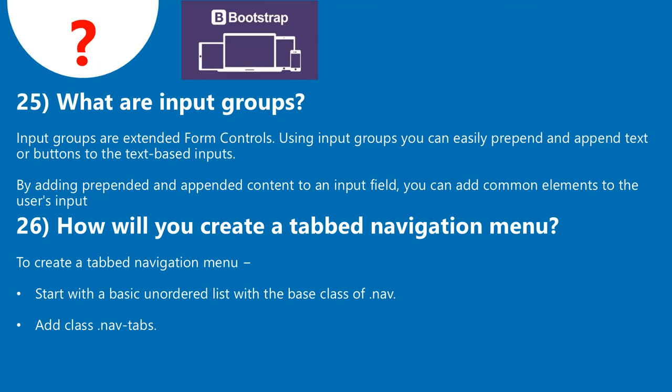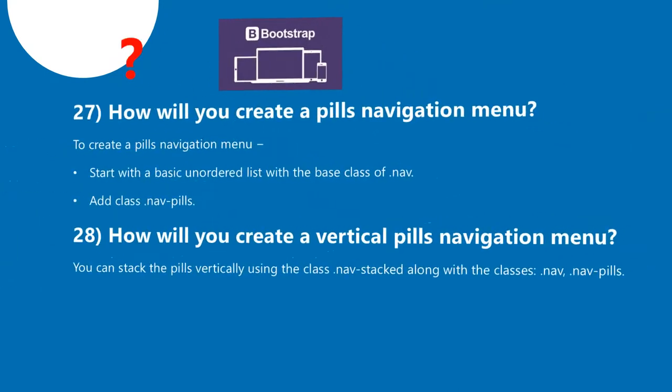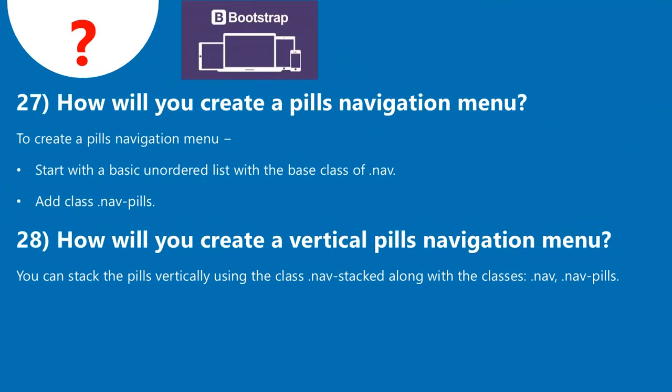Question 26: How will you create a tab navigation menu? To create a tab navigation menu, start with a basic unordered list. Question 27: How will you create a pills navigation menu? Start with a basic unordered list with the base class of .nav, then add class .nav-pills. Question 28: How will you create a vertical pills navigation menu? You can stack the pills vertically using the class .nav-stacked along with the classes .nav and .nav-pills.